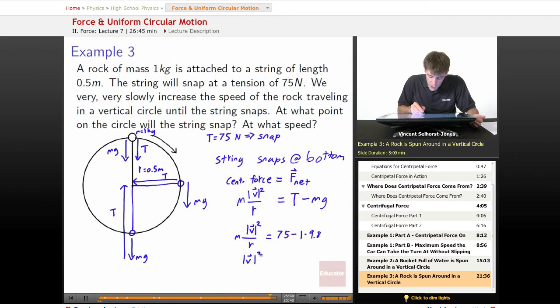We get v squared, the absolute value of v squared, speed squared is equal to the radius. What's the radius? The radius is half a meter, 0.5 times 75 minus 1.98 divided by the mass. What's the mass? Well, the mass is just equal to 1 so we can forget about it being on the bottom.